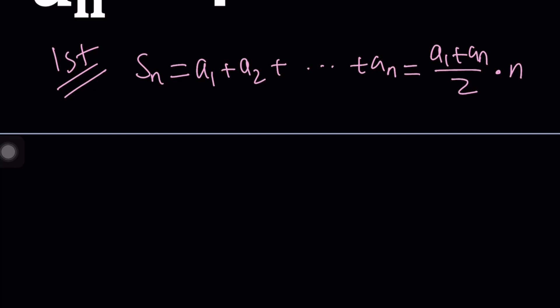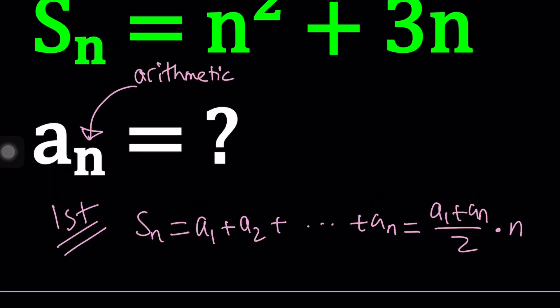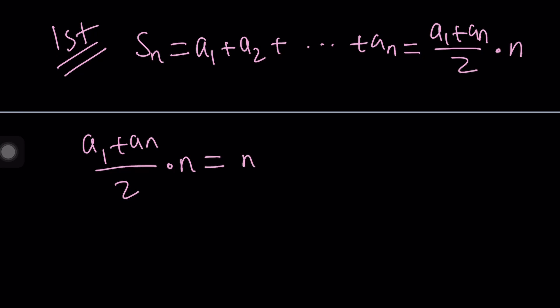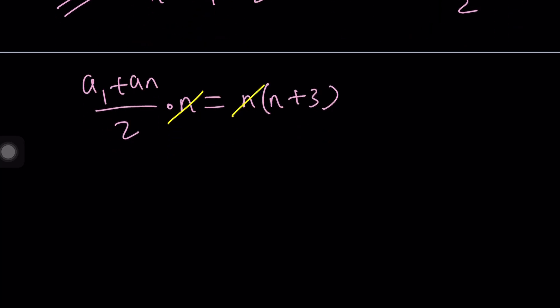So let's go ahead and set this expression equal to our sum. And of course, we're going to be able to get something from here. But notice that this expression is factorable. We can factor out an n and write it as n times n plus 3. Now, n cancels out. Obviously, n cannot be 0, right? And from here, by cross multiplication, we get a sub 1 plus a sub n equals 2n plus 6.